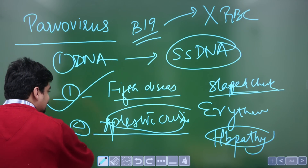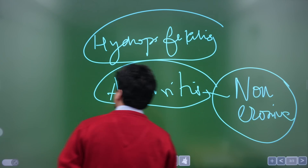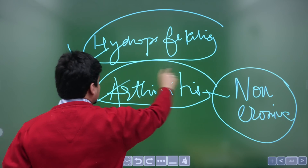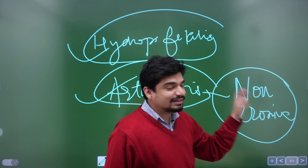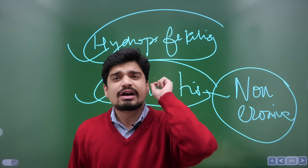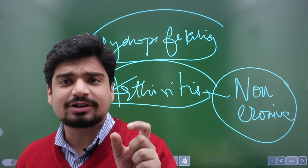So these four manifestations: one — fifth disease; two — aplastic crisis; three — Hydrops Fetalis; and four — arthritis. These are the four manifestations that you need to remember. Very, very high yield as far as your entrance exam is concerned.